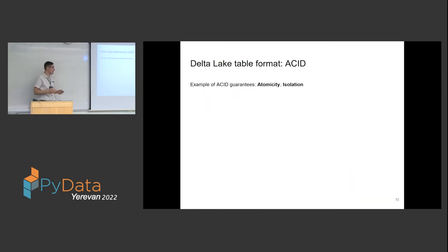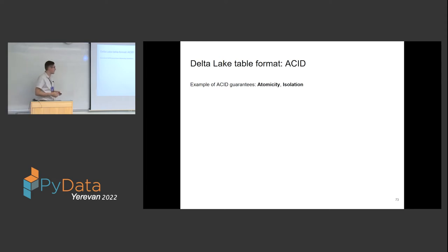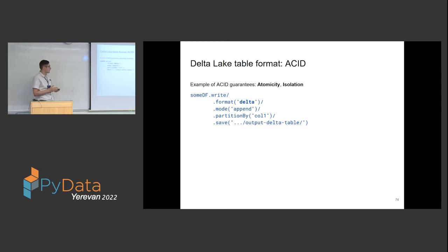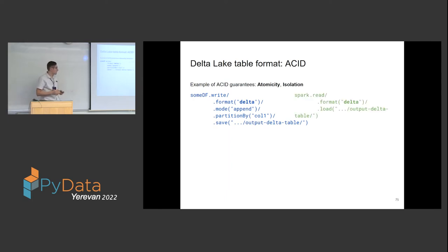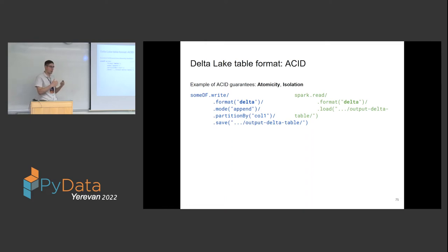Now let's look at how Delta Lake provides ACID guarantees. For atomicity and isolation: imagine we have a writer writing in append mode to a Delta Lake table, and a reader reading from the same location — a race condition situation where outcomes depend on who starts or finishes first. What happens is that if the reading starts before writing completes, the reader has to see the previous state. The reader will only see the files recorded in the previous metadata commit.